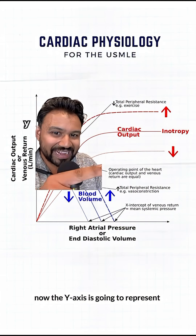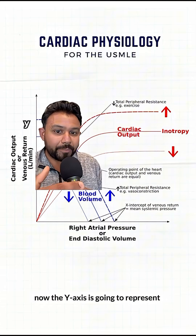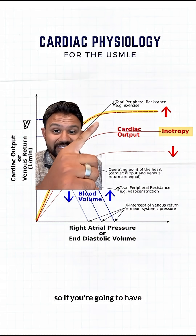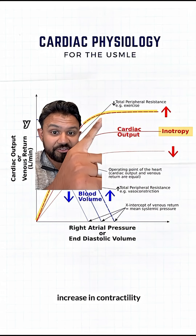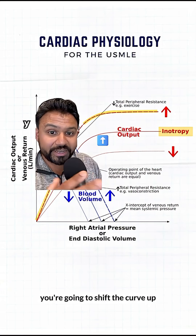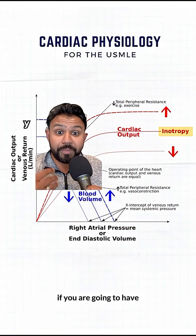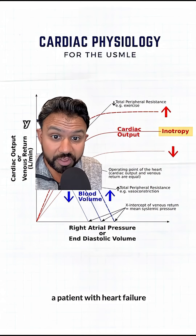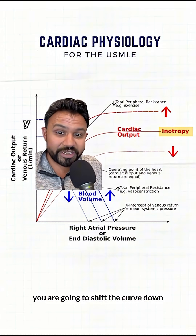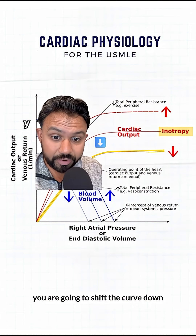The y-axis is going to represent cardiac output. If you have an increase in contractility, you're going to shift the curve up. If you have a patient with heart failure, you are going to shift the curve down.